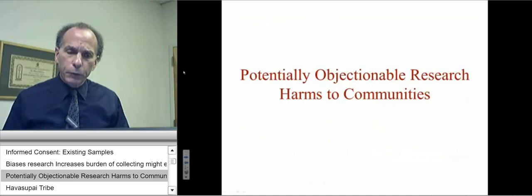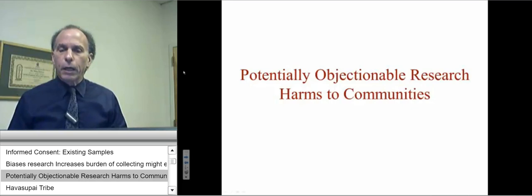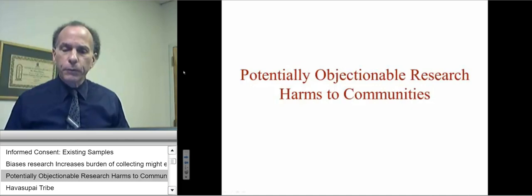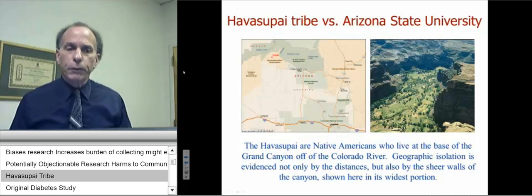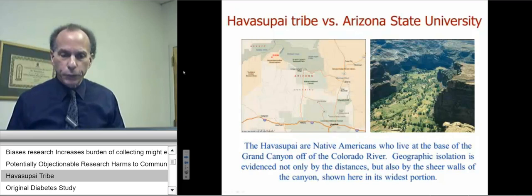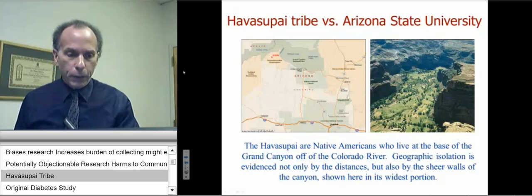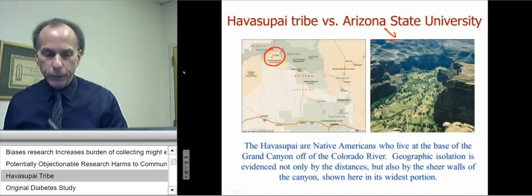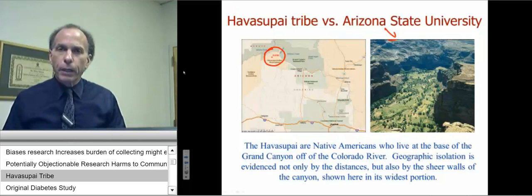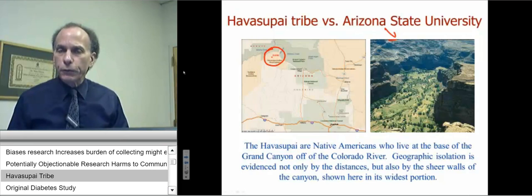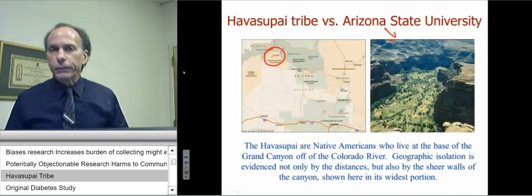The next subject I want to talk about is potentially objectionable research in genetic research — specifically, harms to the community even when samples have been de-identified. I'd like to tell you the recent story involving the Havasupai tribe versus Arizona State University. This slide shows where the Havasupai tribe lived in the state of Arizona, on their reservation in a valley. Because of their limited intermingling with other members of society in the U.S., their genetic material was considered somewhat homogeneous.